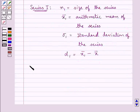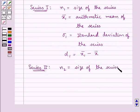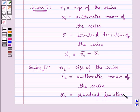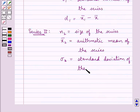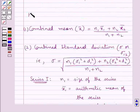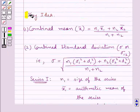For series 2, n2 is the size of the series, x̄2 is the arithmetic mean of the series, sigma2 is the standard deviation of the series, and d2 = x̄2 minus x̄. This is the key idea that we would use for the solution of this question.